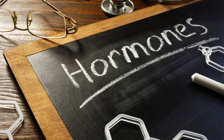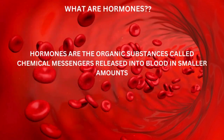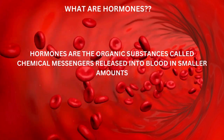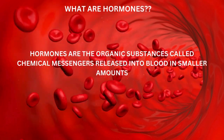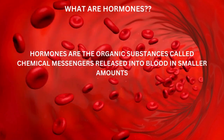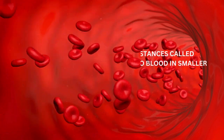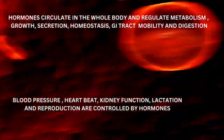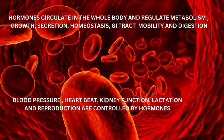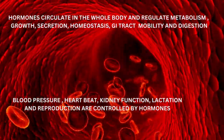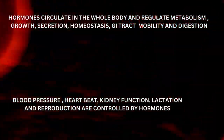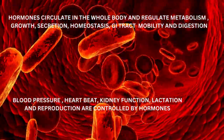Before entering into the class, let's cover the basics of hormones. Hormones are chemical substances — or organic substances — also called chemical messengers, that are released into the blood in very small amounts. You cannot get hormones from food; the body has to produce them according to the situation we face. These hormones mainly regulate body metabolism, homeostasis, gastrointestinal tract motility, digestion, heartbeat, kidney function, lactation, reproduction, and also maintaining blood pressure — all done by these messengers called hormones.